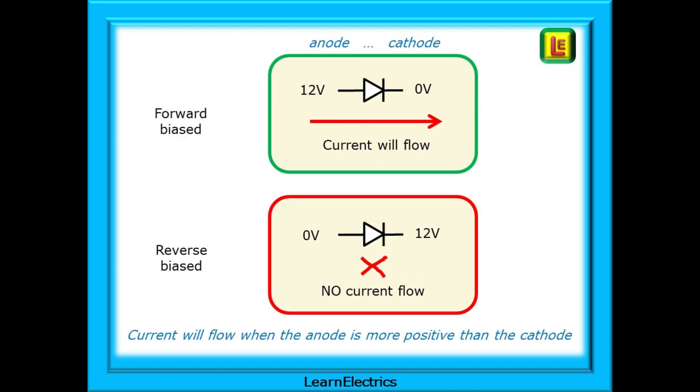If we now put voltages onto the drawing, it looks like this. With 12 volts applied to the anode and 0 volts to the cathode, the diode will be forward biased. It will begin to conduct. This is just an example voltage. Much lower voltages can cause the diode to operate. And if the voltages were to be reversed, 12 volts on the cathode and 0 on the anode, the diode turns off. It is reverse biased.